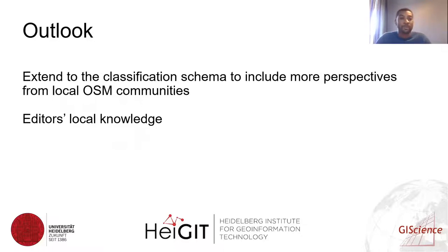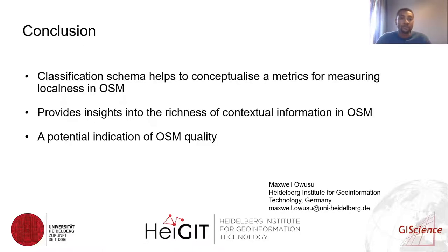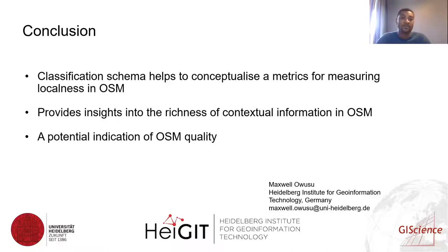In summary, we have presented the classification schema. An outlook is to include more perspectives from local communities and also to group mappers' local knowledge into these levels to see how their mapping behaviors are evolving over time. In conclusion, the classification schema helps to conceptualize a metric for measuring localness in OSM. It also provides insight into the richness of contextual information, and where most local data or local knowledge is included gives an indication of OSM quality.